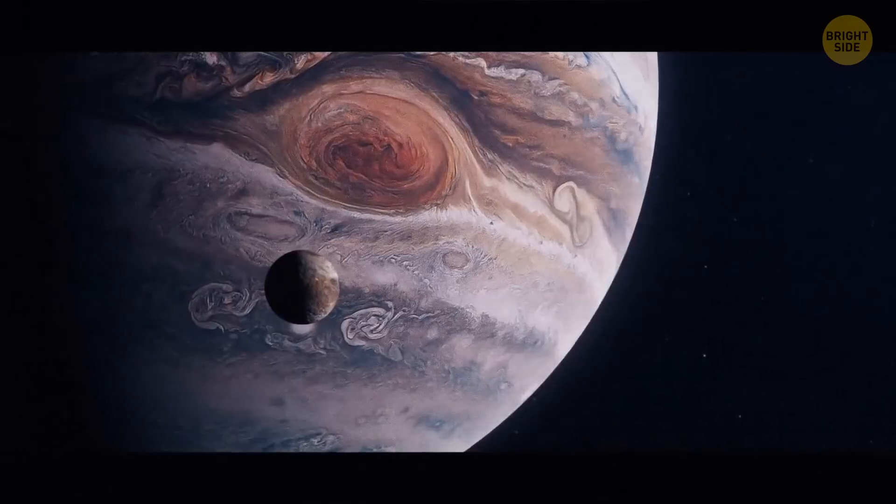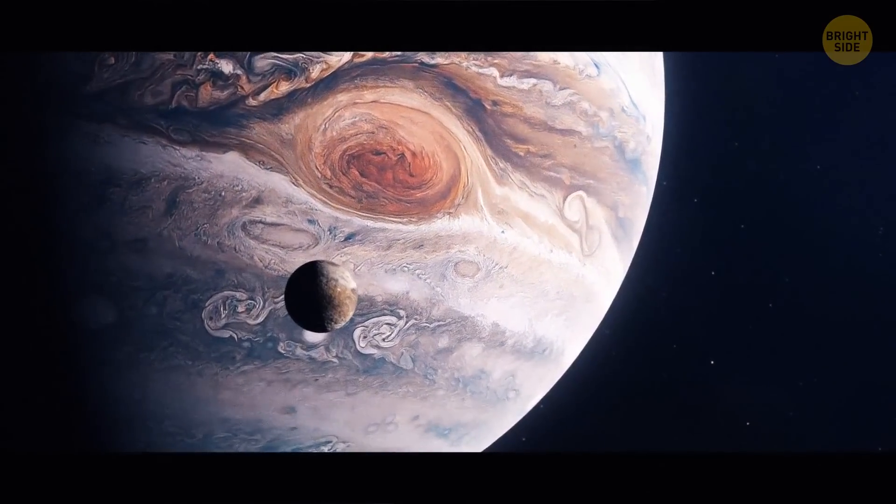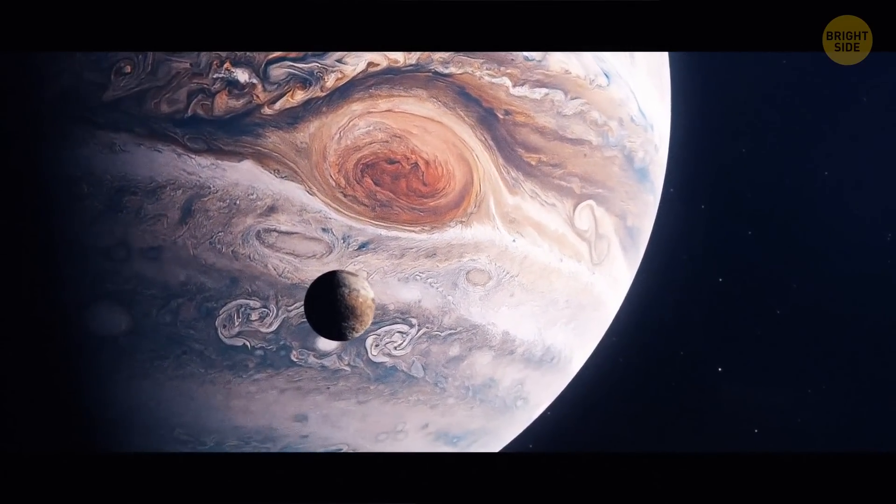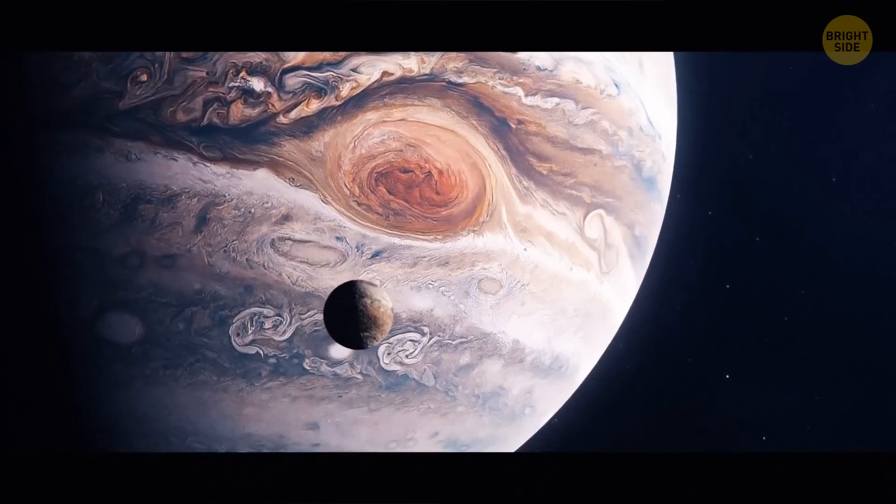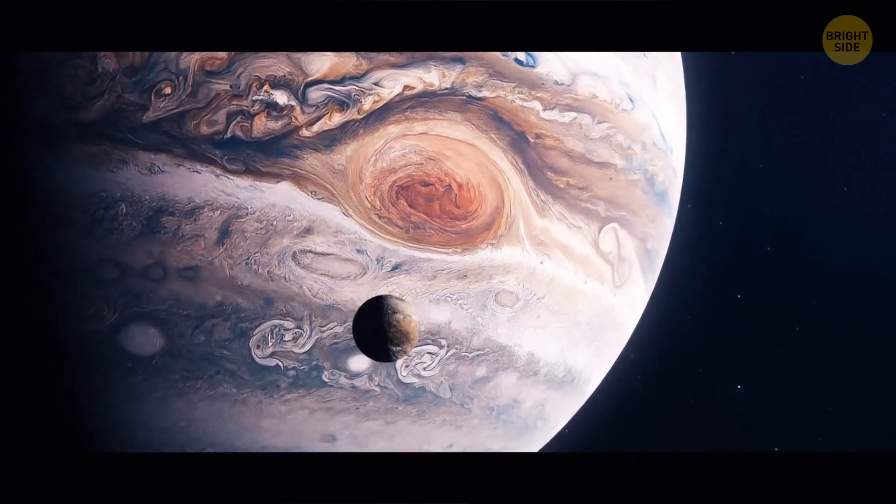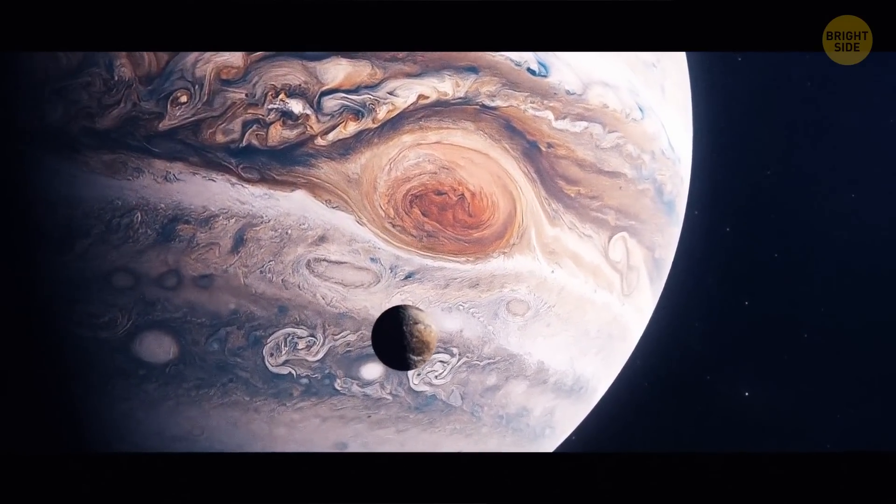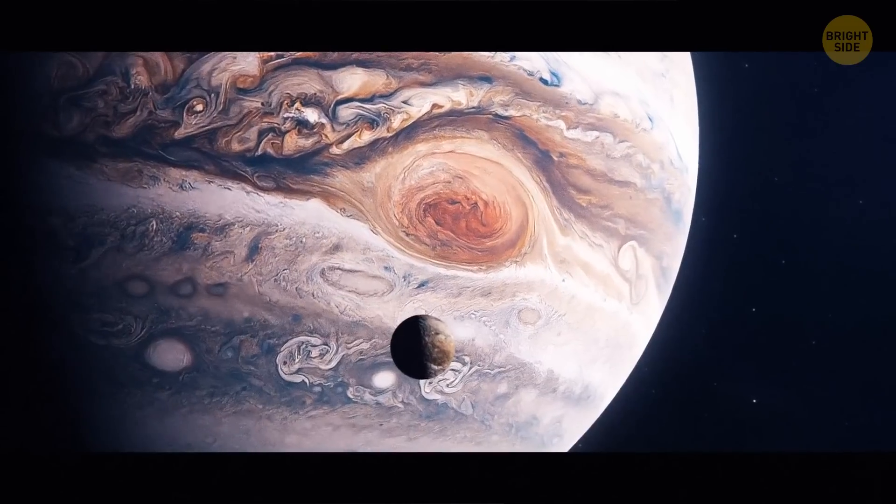The ocean on Jupiter is larger than any other in the solar system. But unlike Earth's oceans, it's made not of water, but of metallic hydrogen. The ocean's depth is a mind-blowing 25,000 miles. That's almost the same as the distance around Earth.